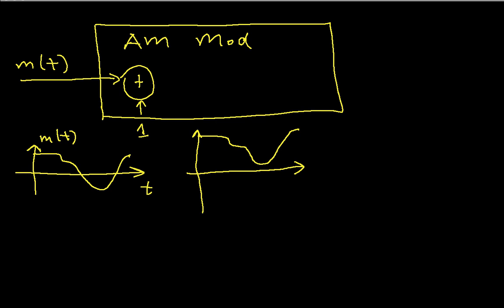After we do this, then we multiply by a signal which is cosine omega C T. Omega C here is called the carrier frequency. And this is the output then of our modulator. We'll call this X of T. And this is the signal that gets sent through a very large power amplifier and then broadcast on the antenna.